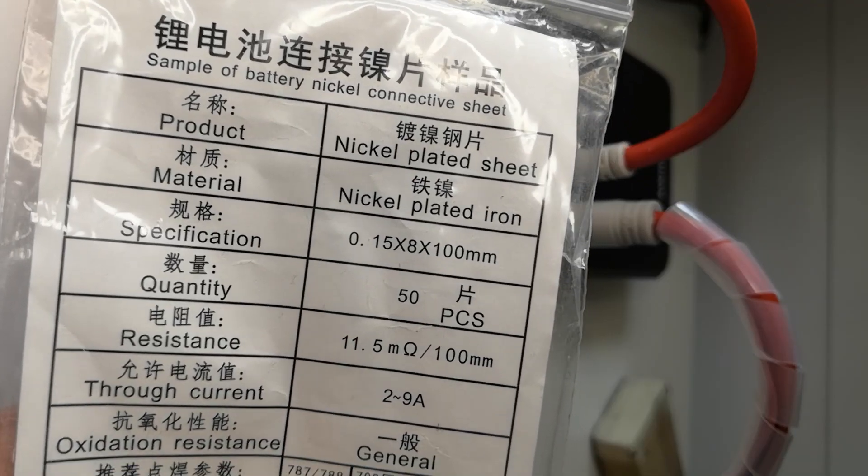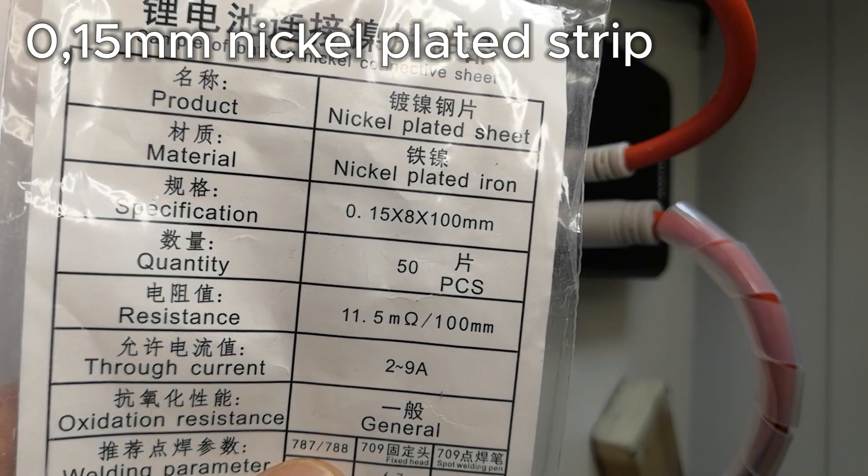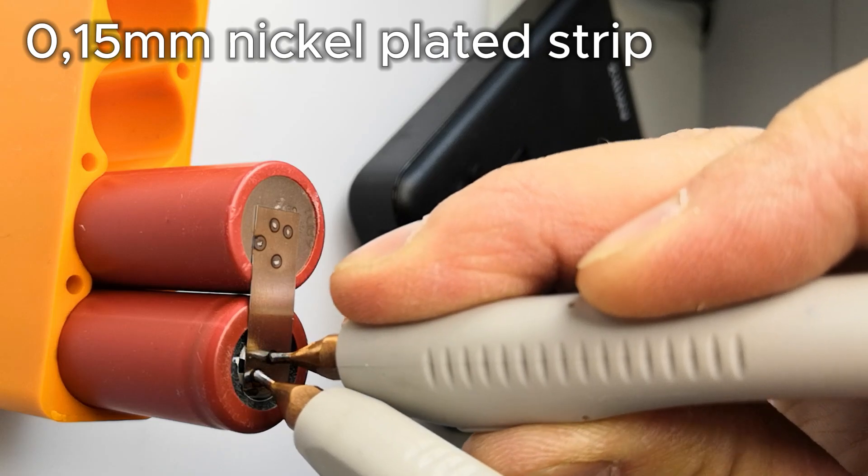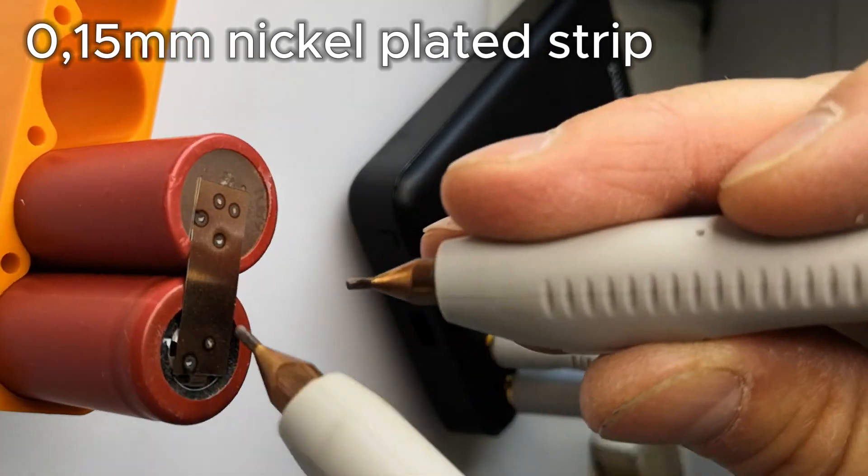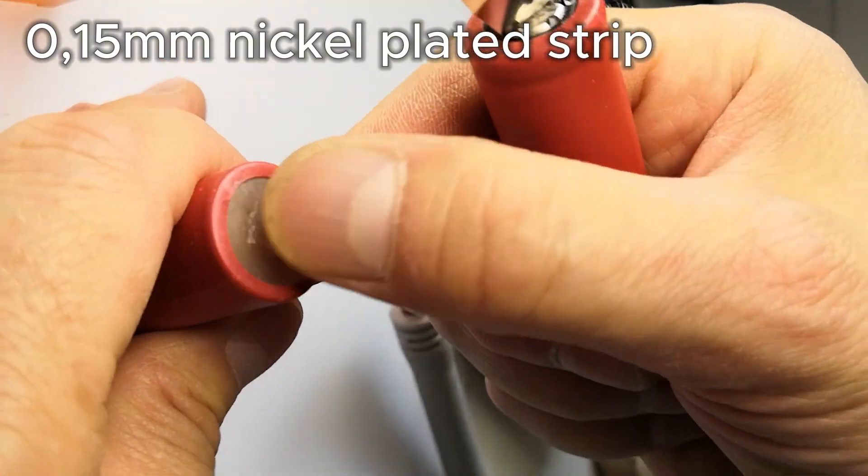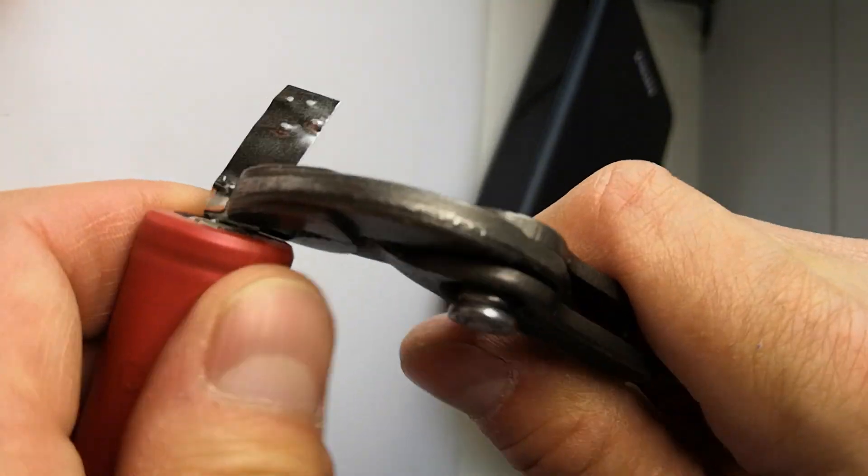Let's try 0.15 mm nickel-plated iron strip. The resistance of iron is higher, so the strip melts more easily. Unfortunately, the negative terminal still comes off easily, but the positive terminal is better attached. This welding is still not good enough.